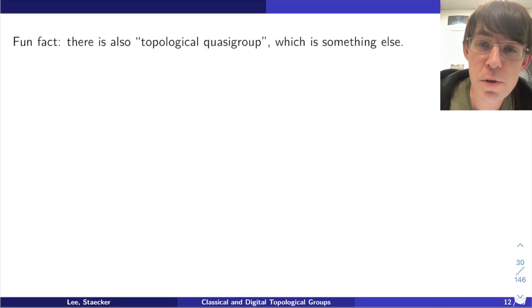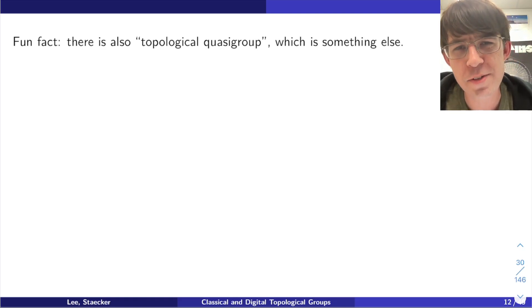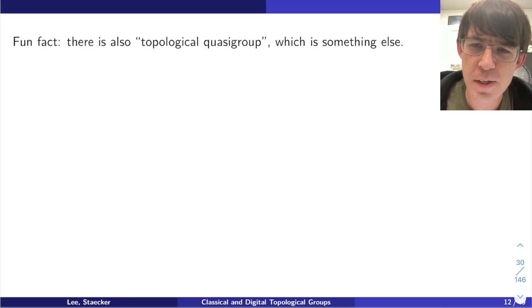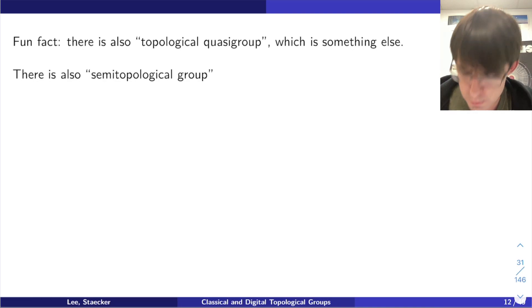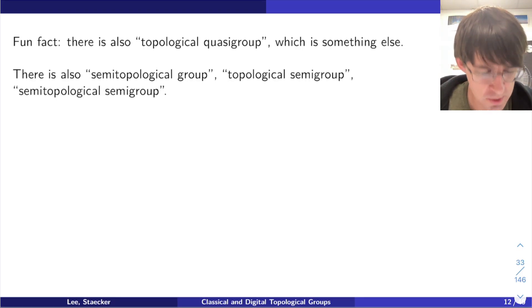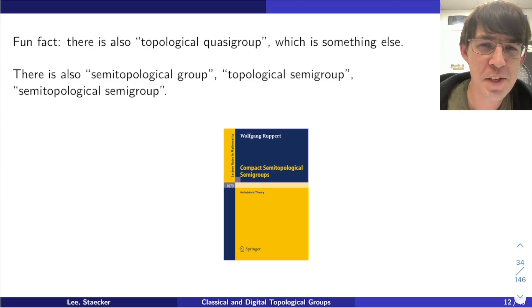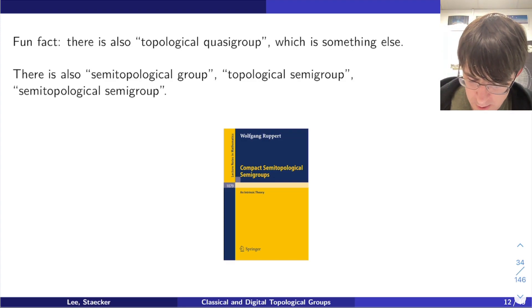There's also something called a topological quasi-group — that's different, because there is something called a quasi-group, which is like a group but has no inverses, only a cancellation property. And then there's a semi-topological group and a topological semi-group. There is even such a thing as a semi-topological semi-group — there's a Springer book called Compact Semi-Topological Semi-Groups. The names are a bit silly. Anyway, that was my ten-minute review of classical topological groups.